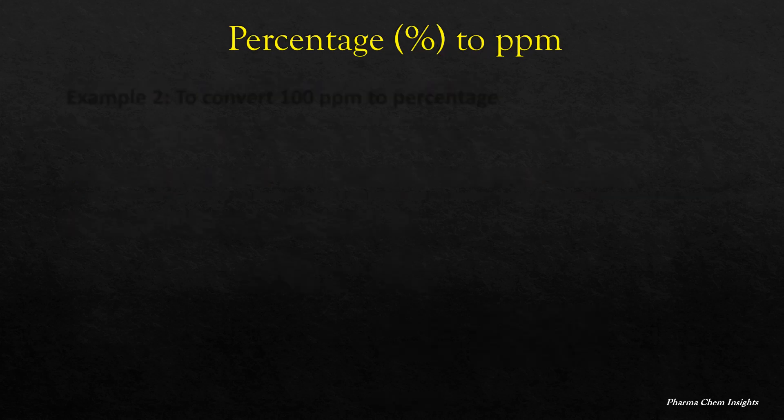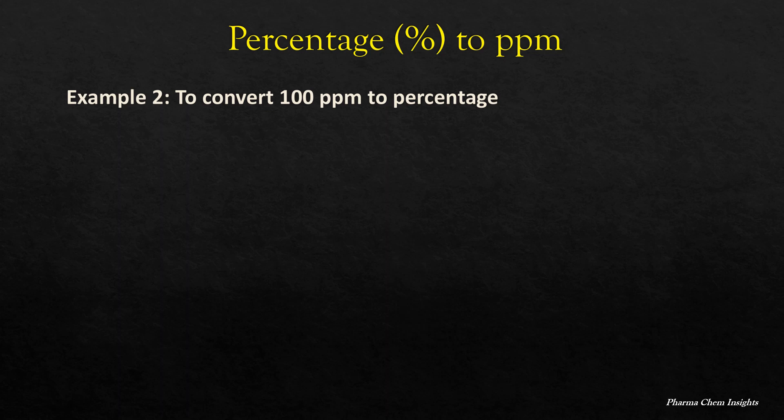Let us see another example. To convert 100 PPM to percentage. Percentage is equal to PPM divided by 10,000. This is the shortcut. By putting the values, 100 divided by 10,000, you will get the answer 0.01 percentage.